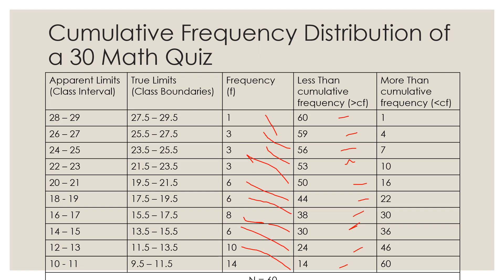Now let's reverse it. Starting from the upper boundary gives us the more than cumulative frequency — also called greater than CF. We start with 1; 1 plus 3 equals 4; 4 plus 3 equals 7; 7 plus 3 equals 10; 10 plus 6 equals 16; 16 plus 6 equals 22; 22 plus 8 equals 30; 30 plus 6 equals 36; 36 plus 10 equals 46; and 46 plus 14 equals 60. Both totals converge to 60.